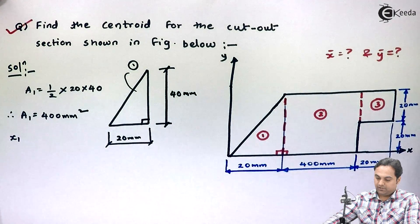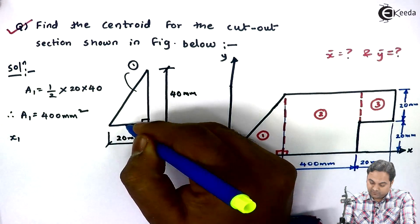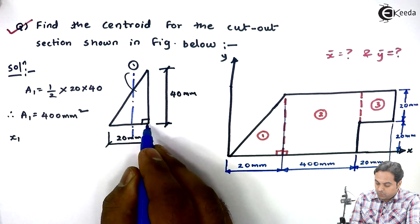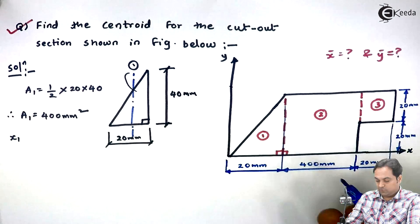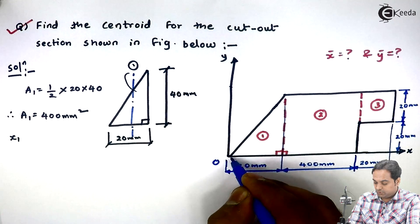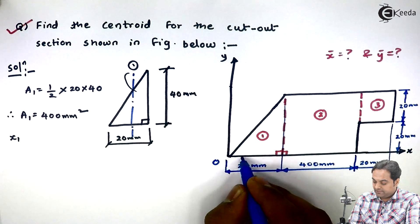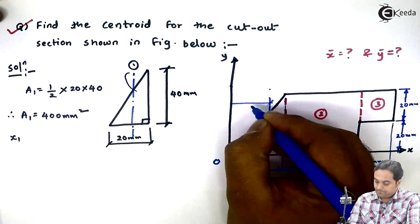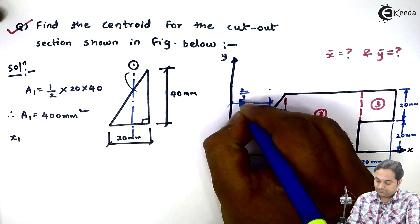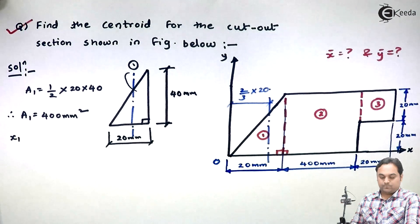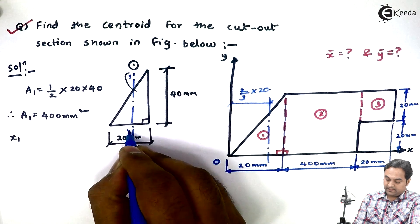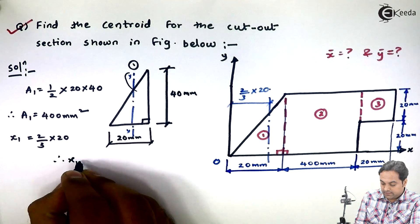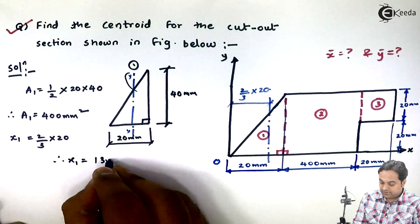Therefore area 1 value will be 400 mm square. Then x1 - x1 is the location of y axis, and as we know y axis will be located one third from base, or in other words since here this triangle is kept at the origin at its apex, from the apex y axis will be at 2 third distance. This distance will be 2 third of 20. Therefore x1 becomes 2 by 3 of 20 and my answer is 13.33 mm.